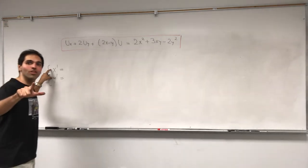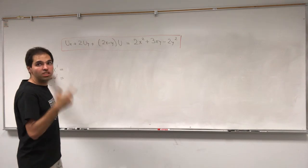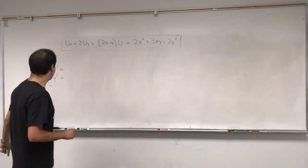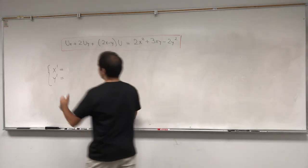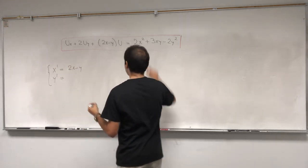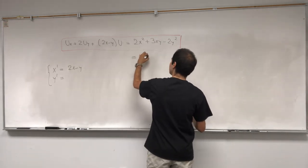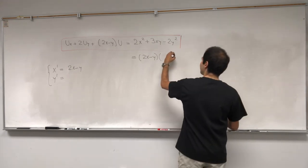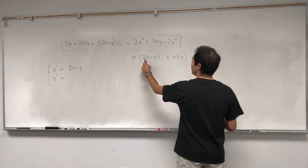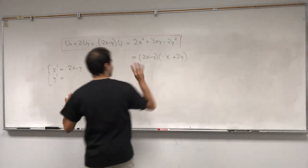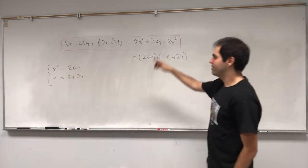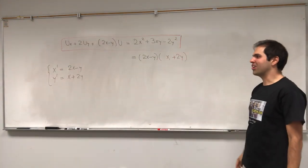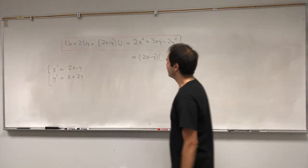Careful — those are not derivatives, those are just new variables. Think u and v, except we're already using u for our function. So what can we use for x prime and y prime? How about the term 2x minus y? And then for y prime, let's try x plus 2y. This gives you 2x squared plus 4xy minus yx minus 2y squared — so that works. It's kind of orthogonal, like the vector (2,1) is orthogonal to (-1,2), so maybe that's a good reason why this works.